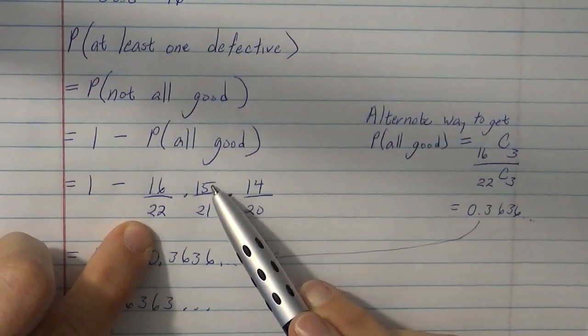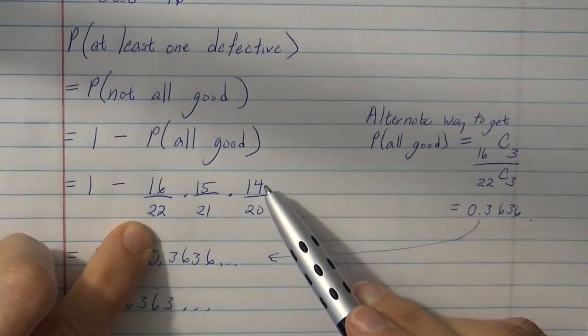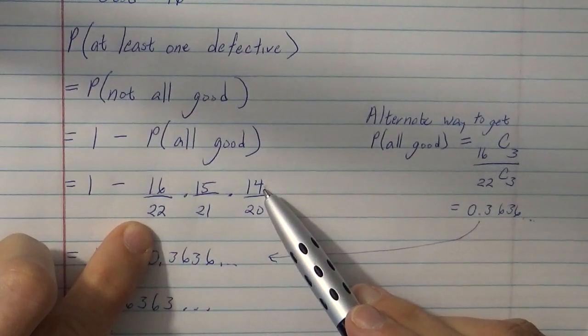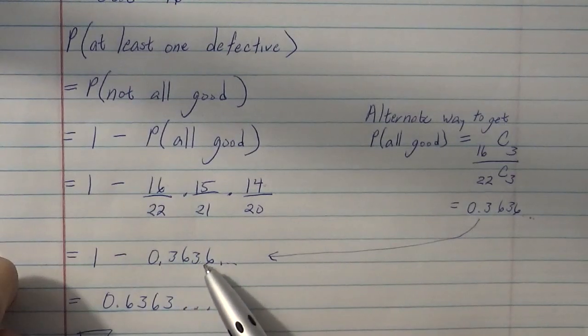and then when you pick the second one, there are 15 good ones left out of 21, and then when you pick the third one, there are 14 out of 20 left. And if you multiply those all together, you'll get 0.3636,